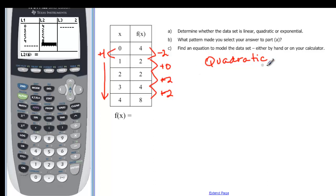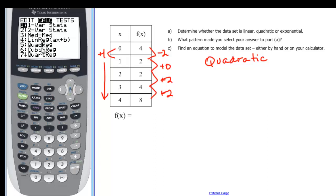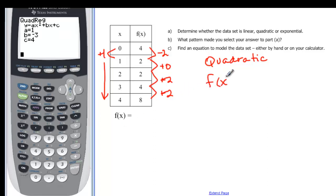Now we've decided it's a quadratic, so when I go back to stat and over to calculate, I'm going to choose a quadratic regression which is five and then enter. And I find out that f of x is going to be equal to one x squared minus three x plus four, or x squared minus three x plus four if you'd rather.